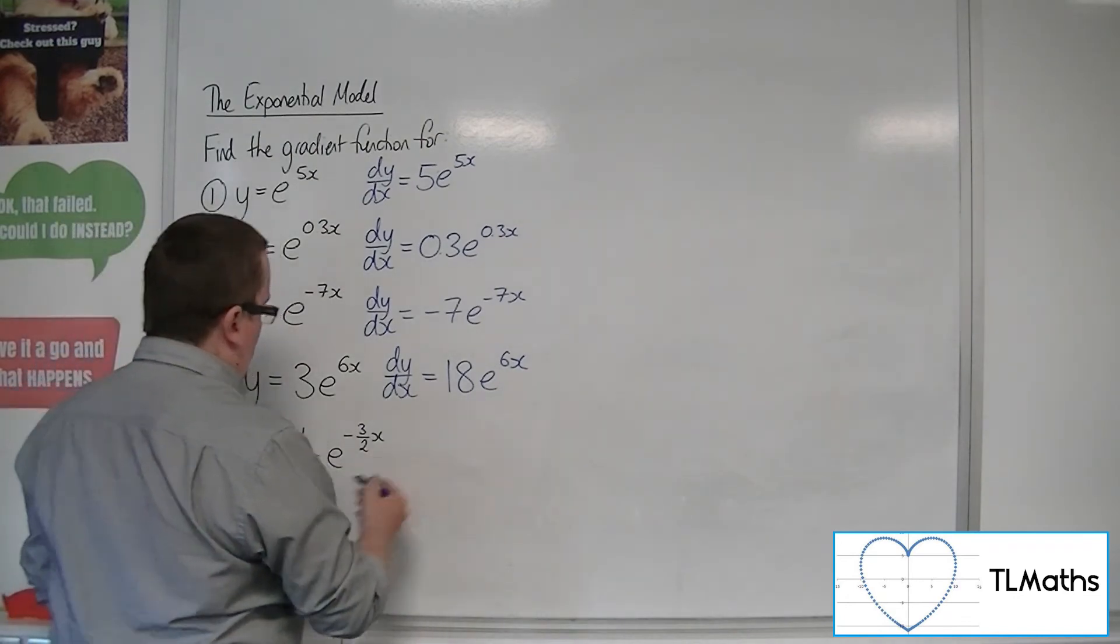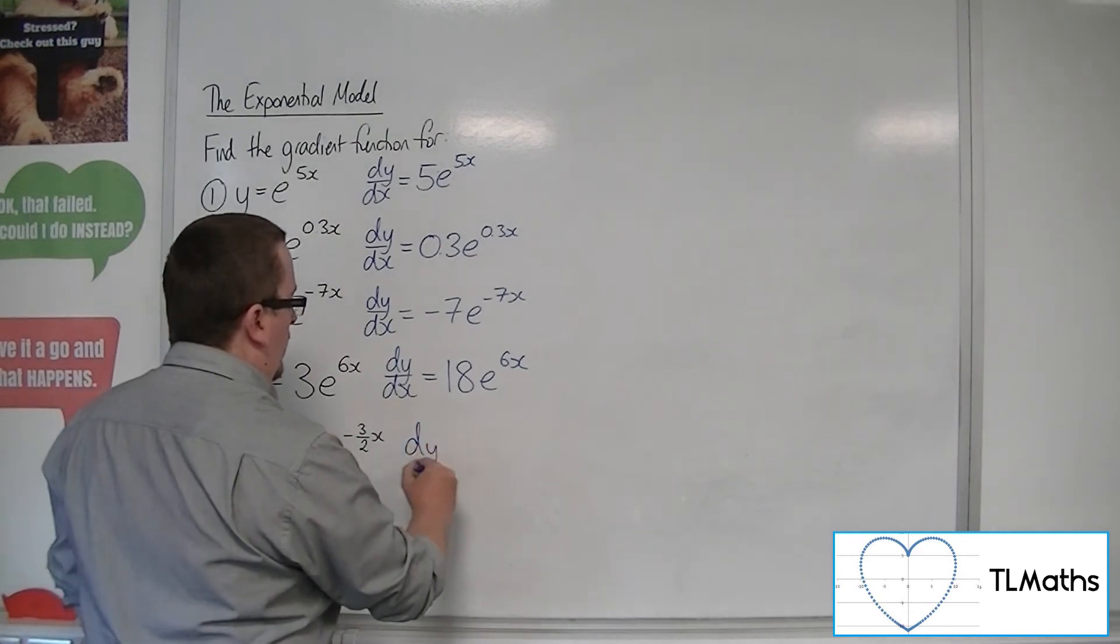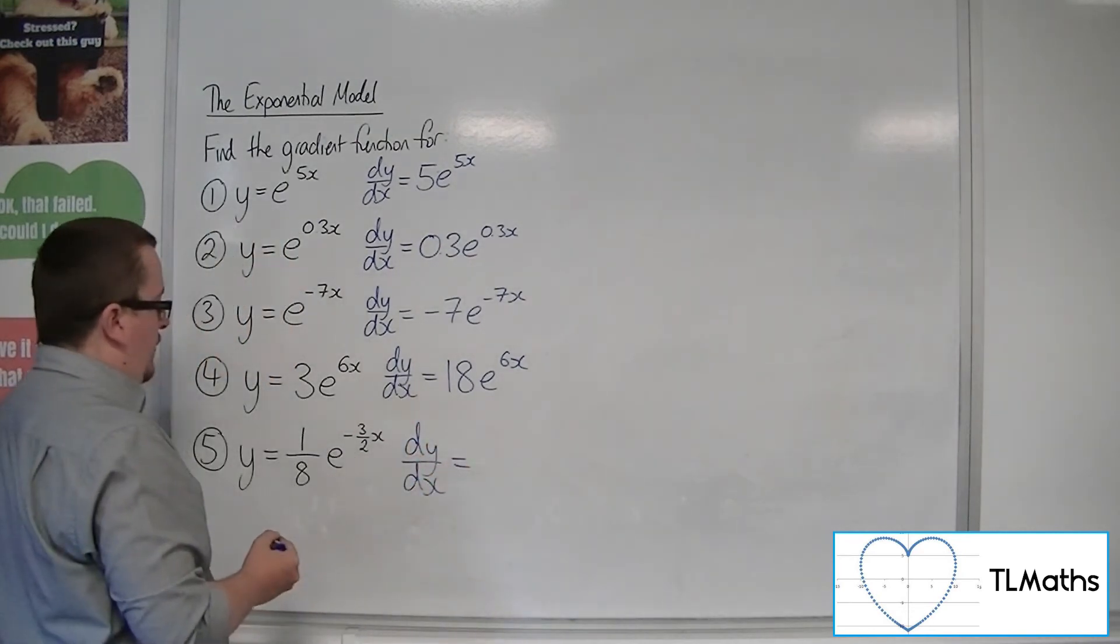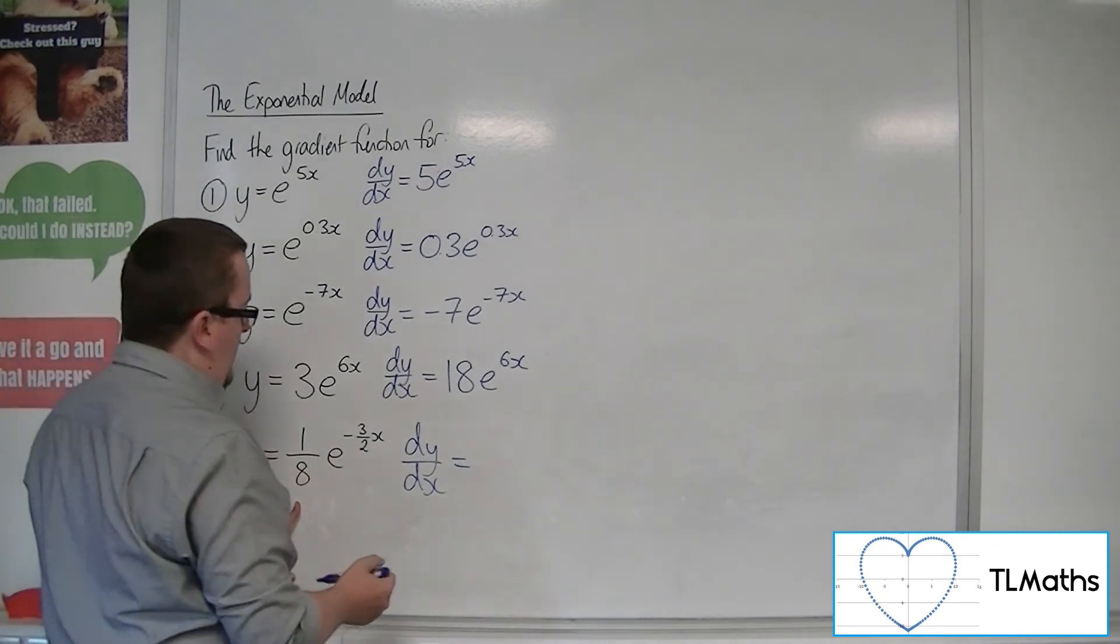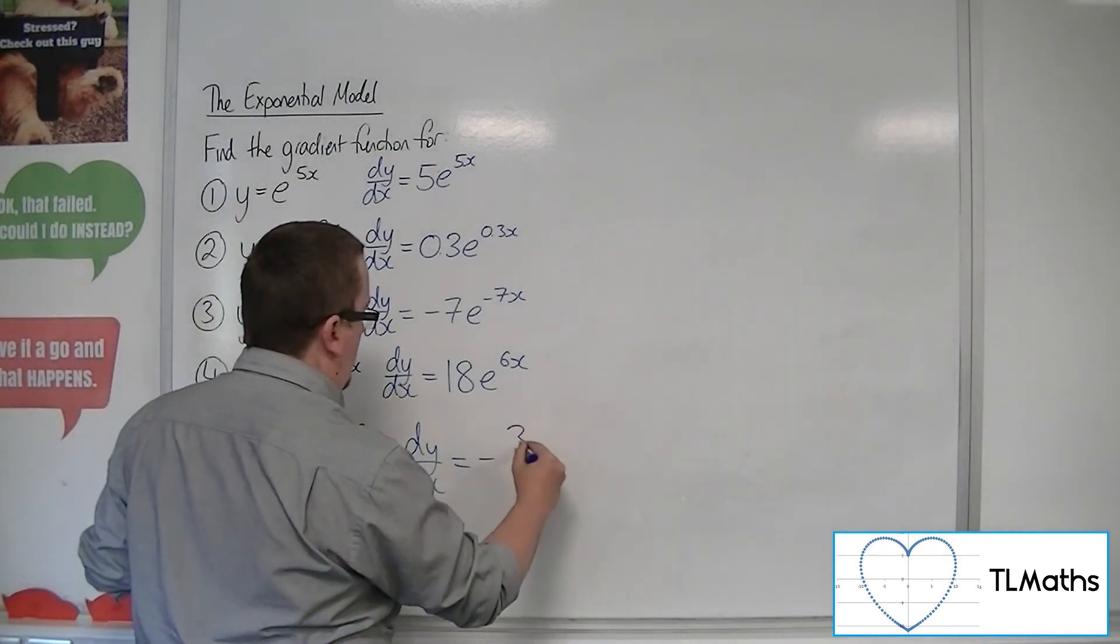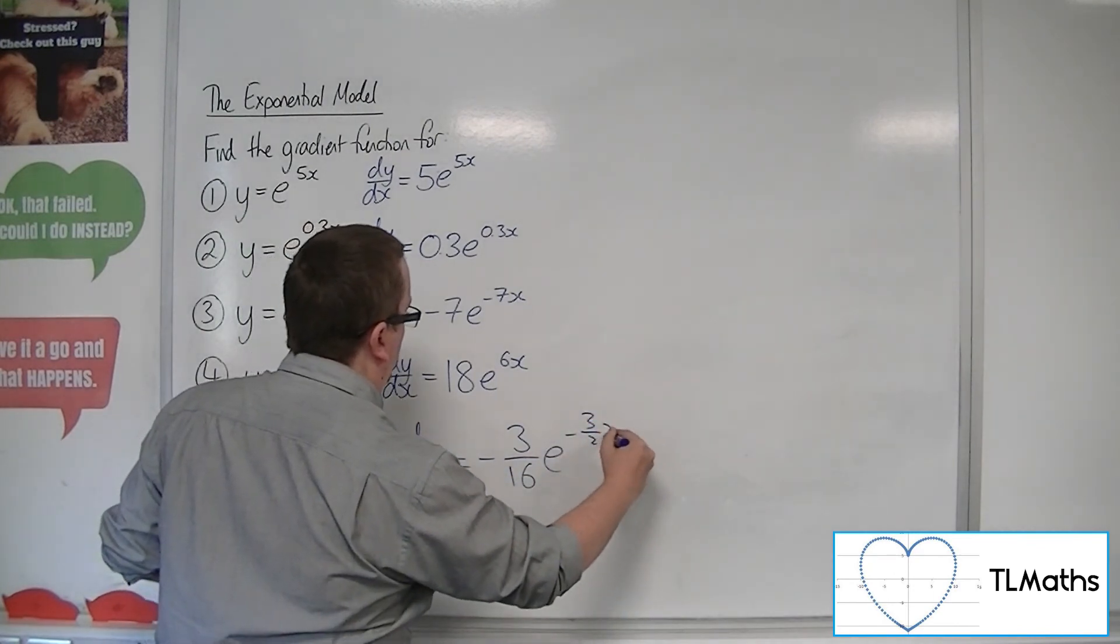And then lastly, y equals 1 8th e to the minus 3 halves x. So dy by dx, the gradient function, the first derivative: 1 8th multiplies with the minus 3 halves, so minus 3 16ths e to the minus 3 halves x.